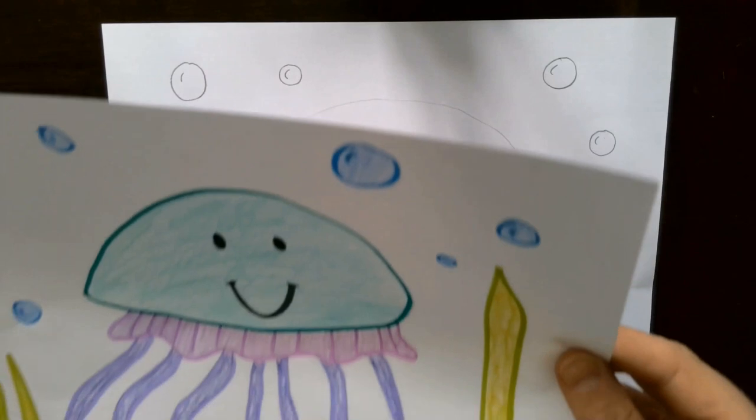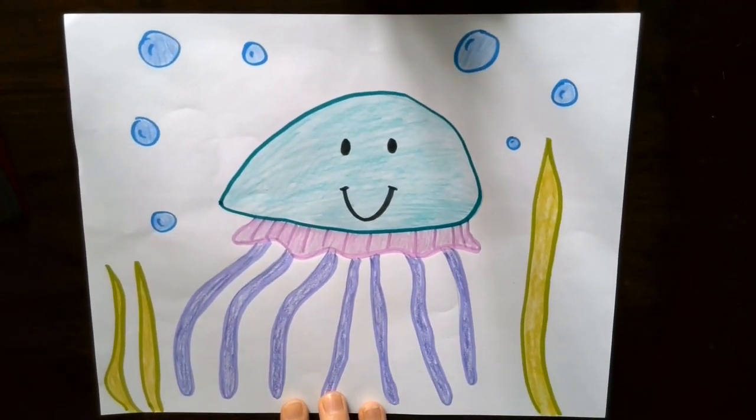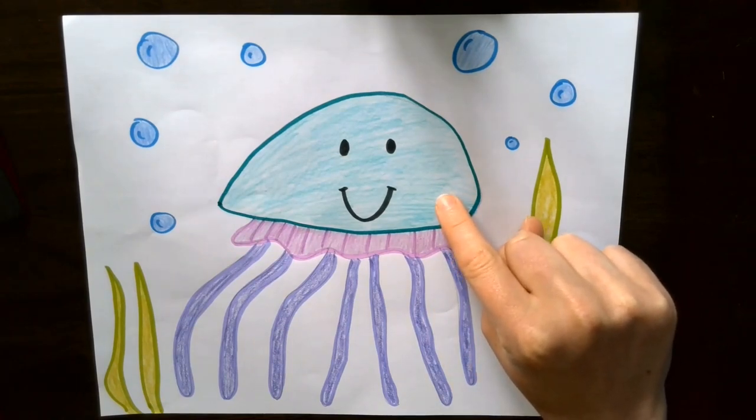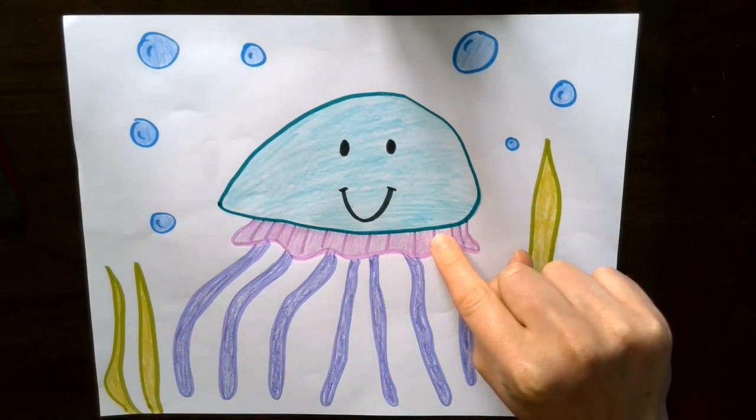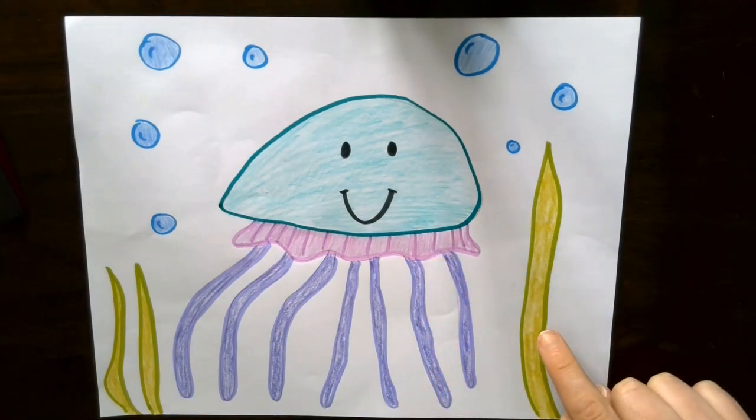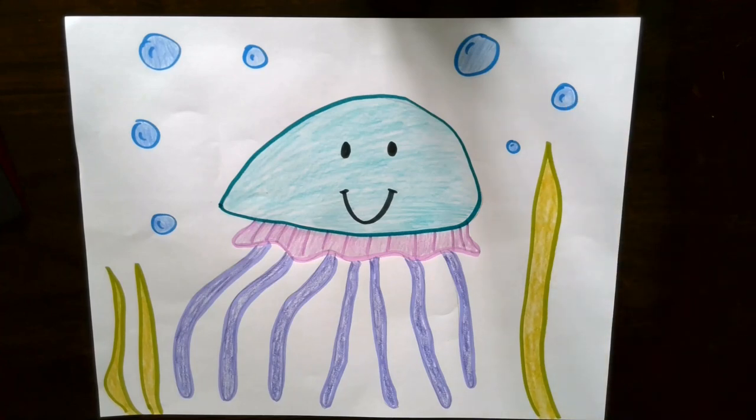Here is what my jellyfish looks like after I've colored. So you can see for the bell at the top, I've chosen a turquoise blue and a magenta pinkish purple color for the muscle. The tentacles I've done purple. I chose bright green for the grass and blue for the bubbles. Jellyfish come in all sorts of different colors. So you can choose what colors you would like yours to be.